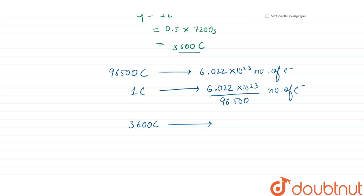So 3600 coulomb will have 6.022 times 3600 divided by 96500 number of electrons. This will come out as 0.224 times 10 to the power 23.